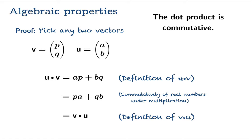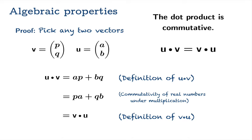So indeed it's the case that u dot v is always going to be equal to v dot u no matter which two vectors you pick. You'll notice there was nothing special about u and v — these four quantities a, b, p, and q could be anything.